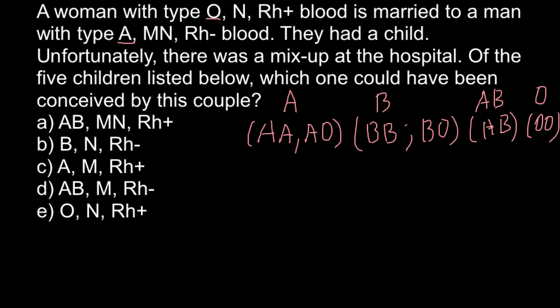Let's now consider what kind of blood group these two parents might have. We know that the mother belongs to blood group O, so her only possible genotype is OO. We can use a Punnett square. The father belongs to blood group A, and blood group A can be made by genotype AA or AO.